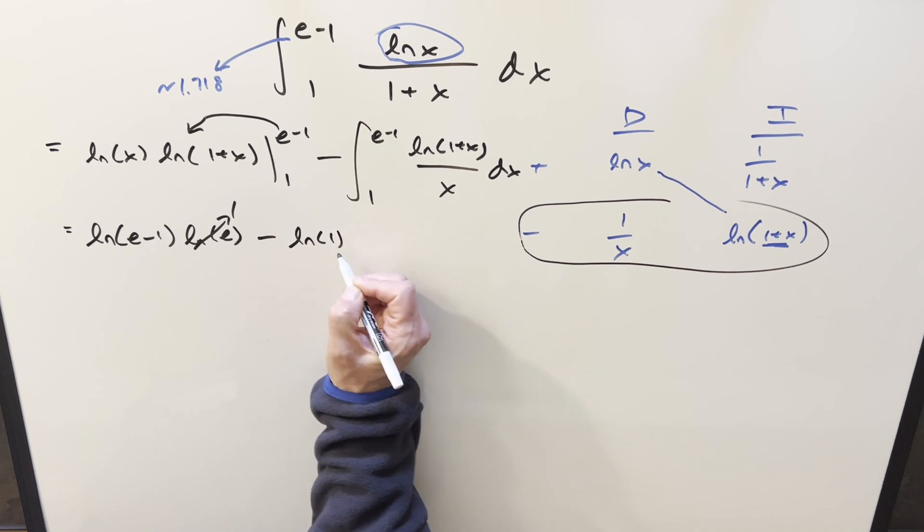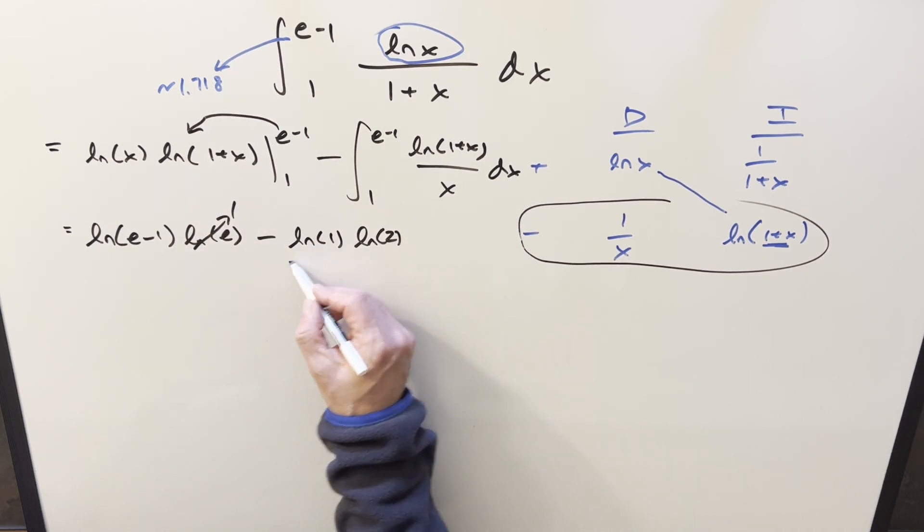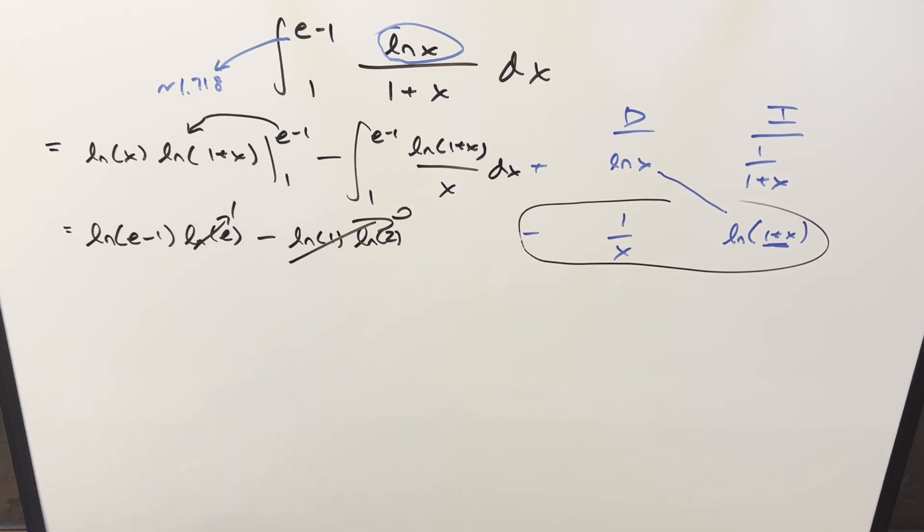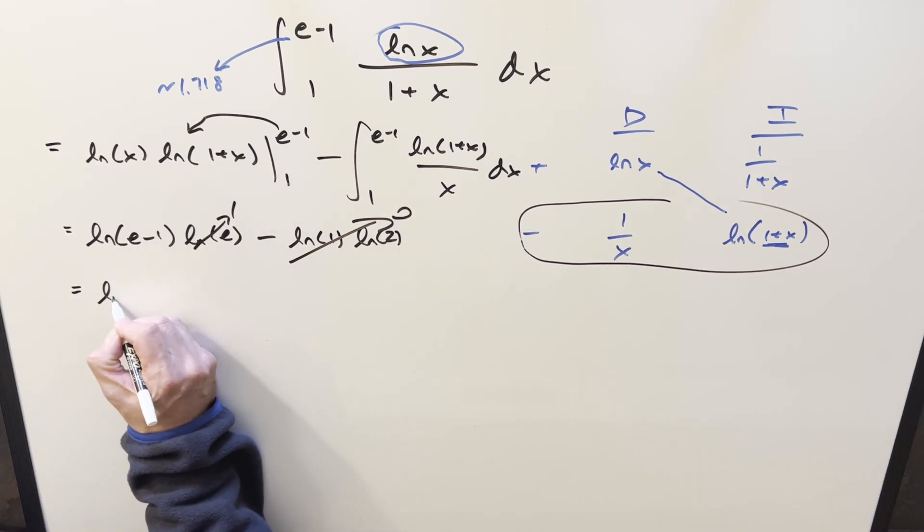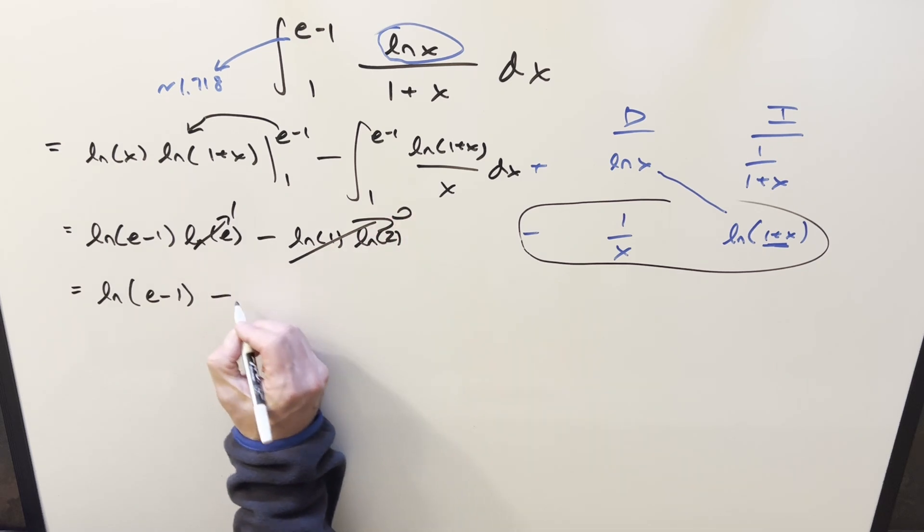And then plugging in 1, we get natural log of 1 times natural log of 2. Natural log of 1 is 0, so this whole thing gets zeroed out. So let's just clean it up a little bit. We're going to have all this left is ln e minus 1 and minus this integral over here.